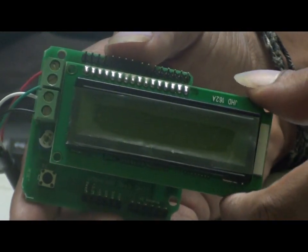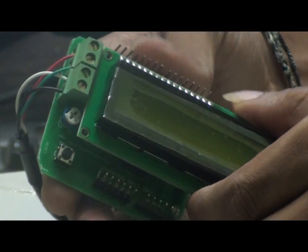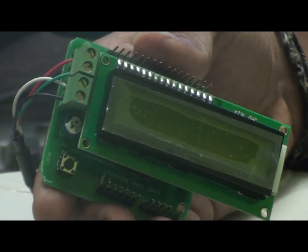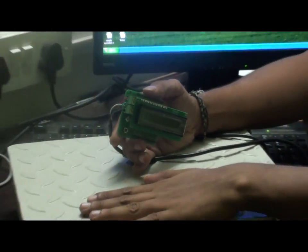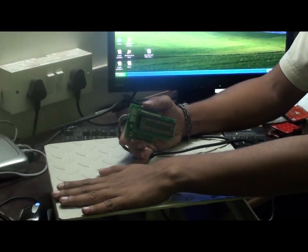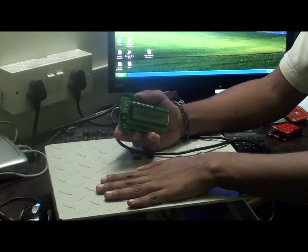This is a 16x2 LCD which I have connected to the load cell breakout. Here you can see the load cell sensor with load cell metal gauge where we are going to apply the load.